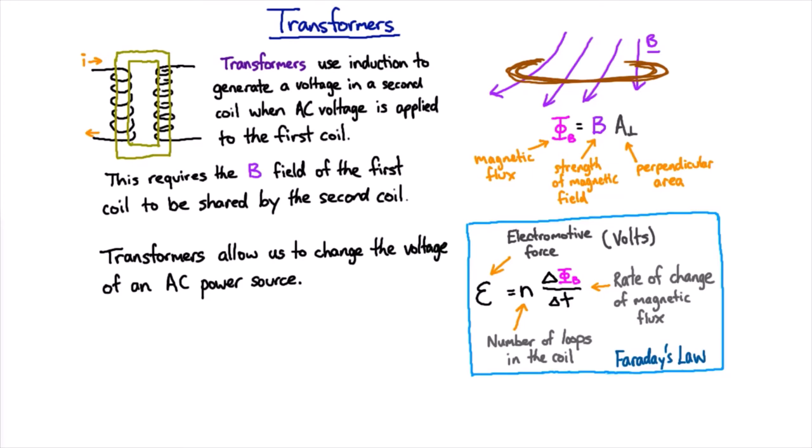And the ratio of the voltages is just exactly given by the ratio of the number of windings of each coil.